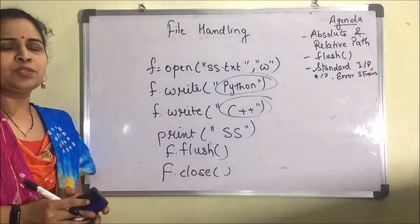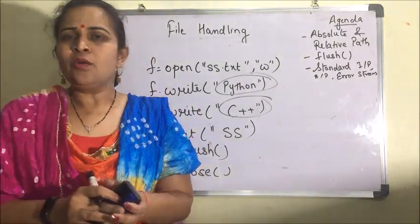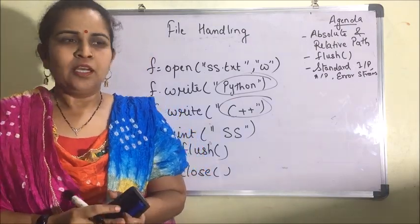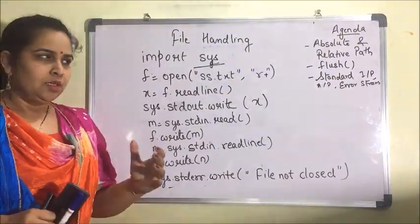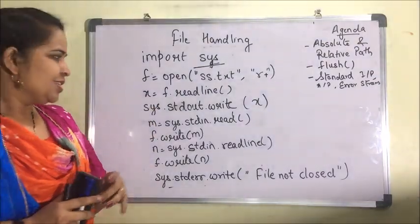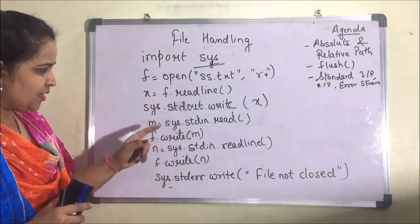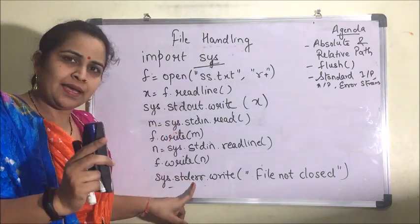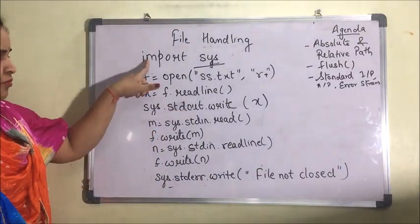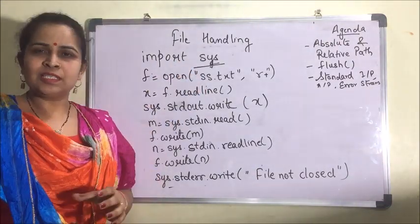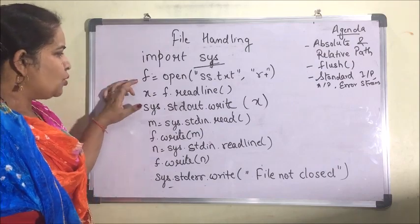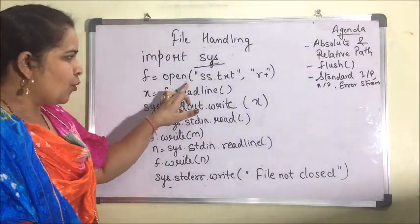When we use the sys module, we can handle these devices explicitly. There are three streams: standard input stream, standard output stream, and standard error stream. We'll start with standard output. First, we import the sys module, which handles all three streams. Then we open a file in r+ mode — meaning read as well as write.